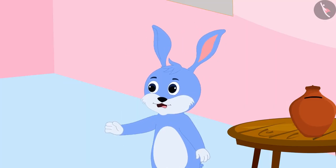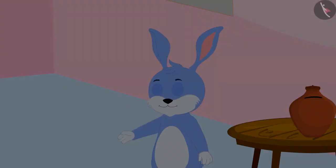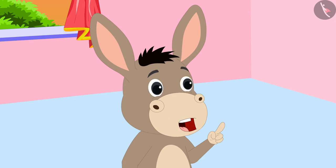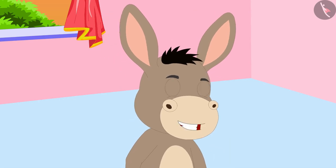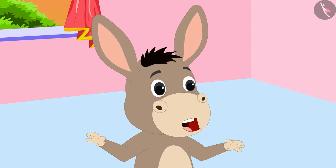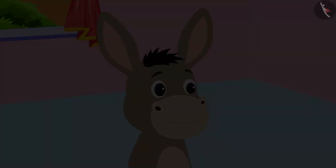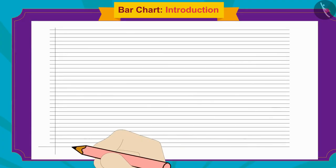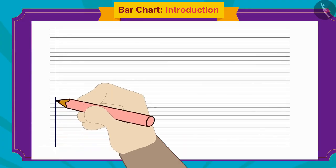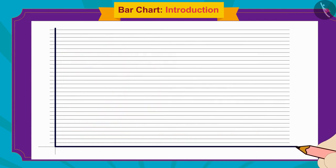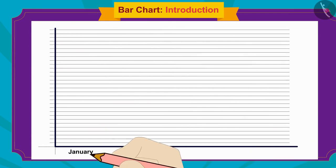Bunny asked, 'Bar chart? What is that?' Bholla explained, 'Bar charts are a way of displaying information. Let me teach you how to make one.' Bholla drew a vertical line and a horizontal line on a paper.